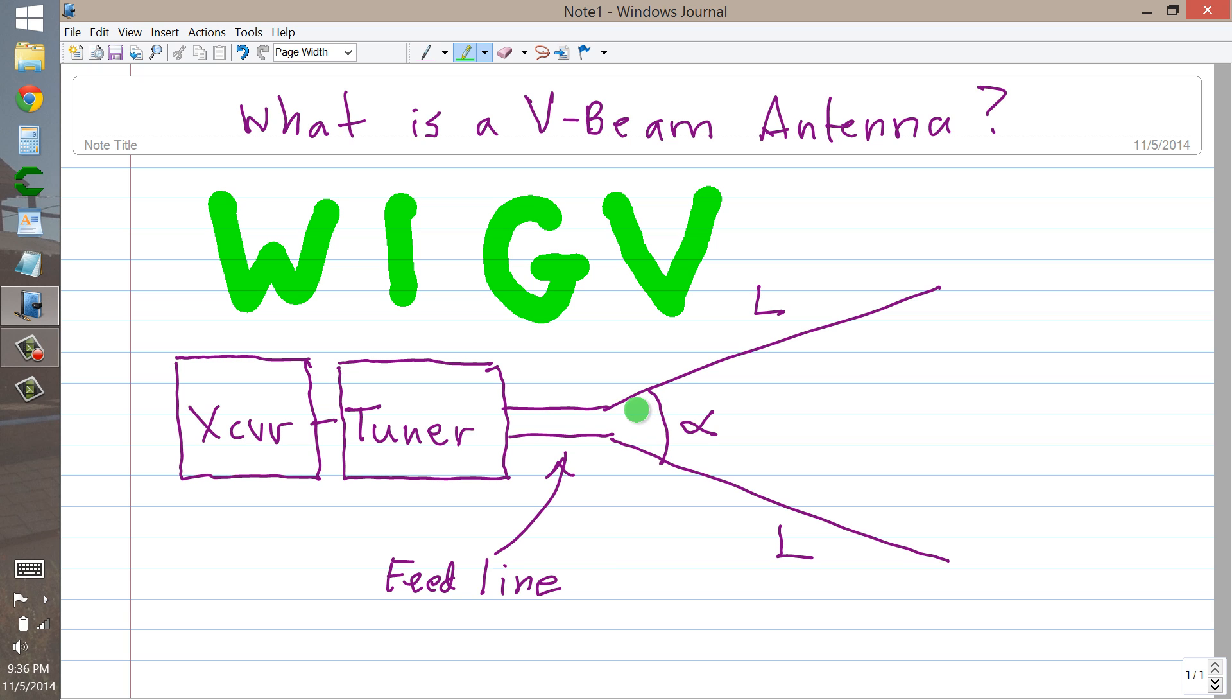Running off in different directions horizontally separated by this apex angle which I will call alpha. Now the optimum value of this apex angle, alpha, depends on the length of these legs of the V-beam and they should be the same.